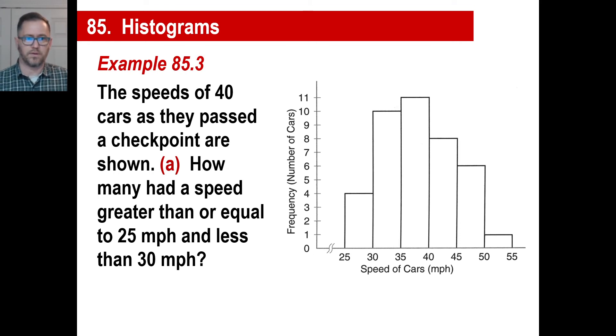And here's an example you can go on these. Let's say, the speeds of 40 cars, as they passed a checkpoint, are shown. In other words, they're the speed of the cars. How many had a speed greater than or equal to 25 miles an hour and less than 30 miles an hour? Greater than or equal to 25 and less than 30. This is where you would go, okay, well, how many, it's going to be this group right here, okay? And the answer to that would be 4, number 4.